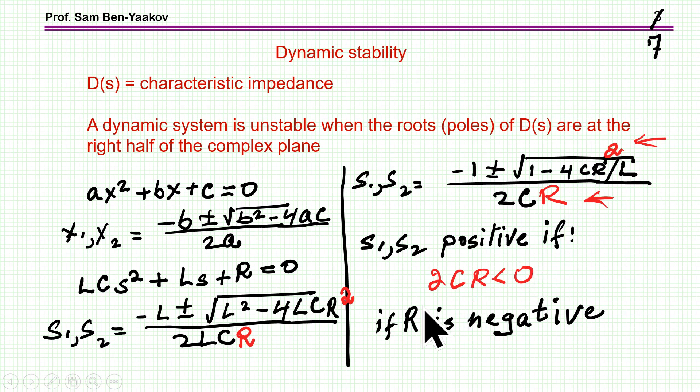is that this system will be unstable. We'll have a pole in the right half side of the complex plane when R is negative. That is when 2Cr is negative. If this is negative, here is negative. This is smaller than 1, so the numerator is negative. So if this is negative, then this becomes positive, and therefore there is an unstable pole.